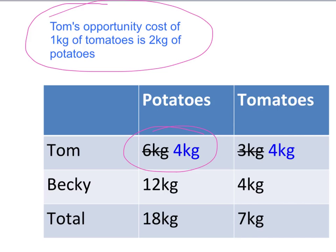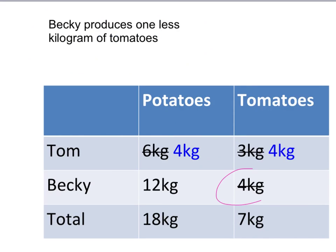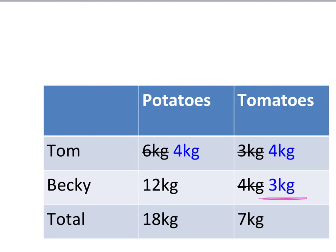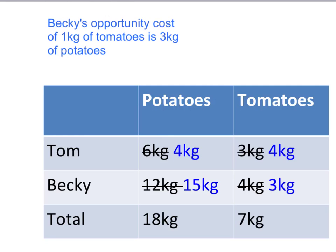What about Becky? She will be producing one less kilogram of tomatoes, so Becky's new production level is three kilograms of tomatoes. Becky takes six hours to produce a kilogram of tomatoes, so by producing one less kilogram she frees up six hours. She can use that time for potato production — it takes Becky two hours to produce a kilogram of potatoes, so she's able to increase her potato production by three kilograms, from 12 to 15 kilograms.